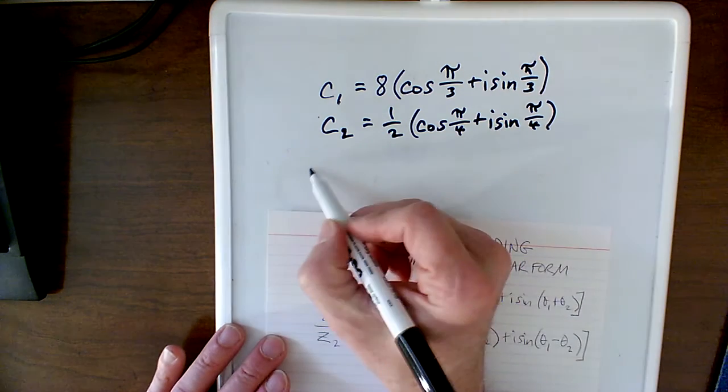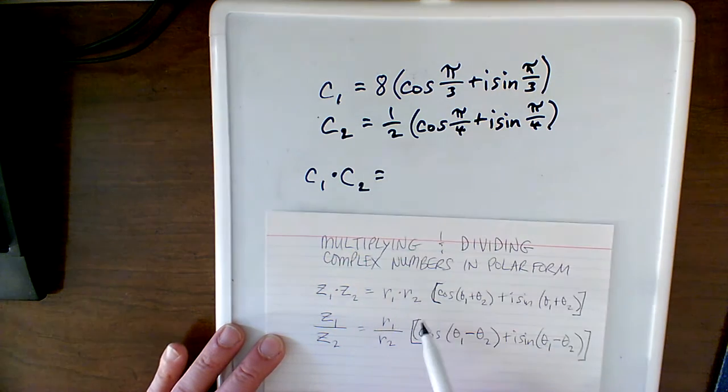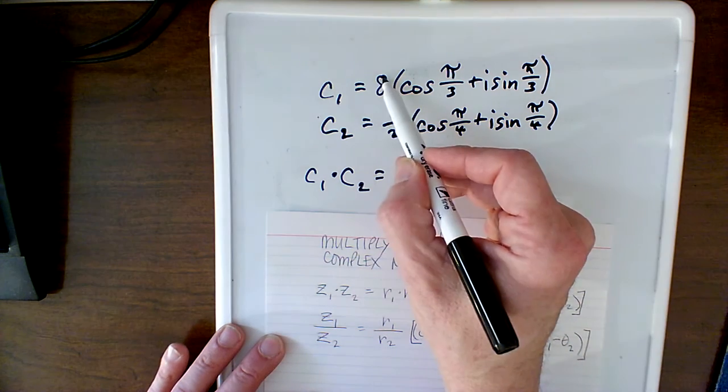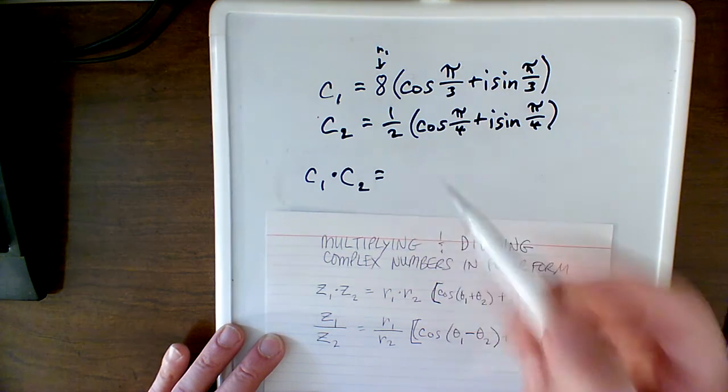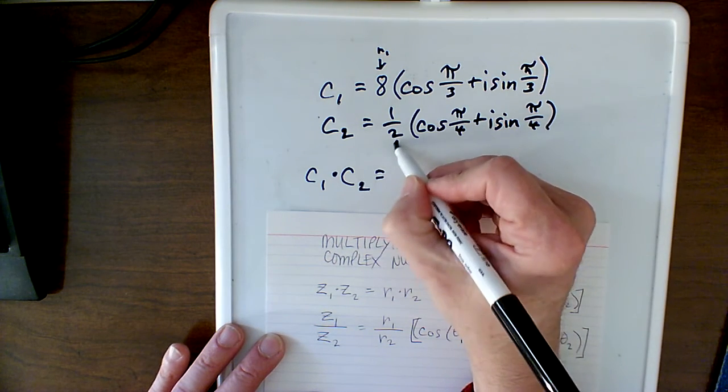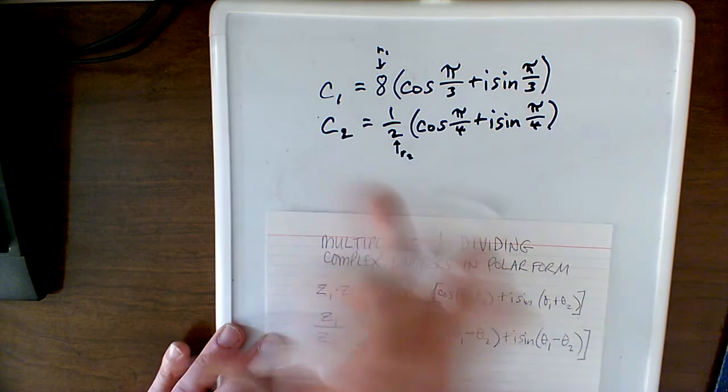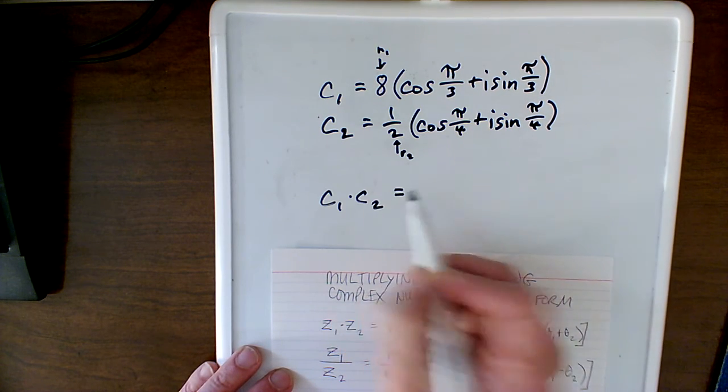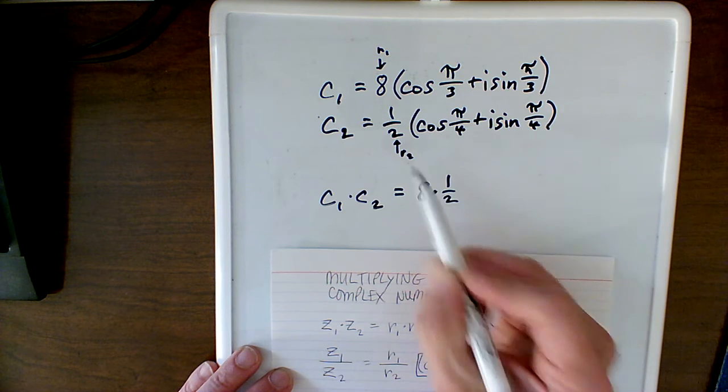Let's put this down here, c1 times c2. I'm going to multiply the r1 and r2 together. So there's r1, I'll just make a little note here that's r1, that's our r2. So bring this down a little bit, c1 times c2 equals 8 times one-half because that's r1 times r2.